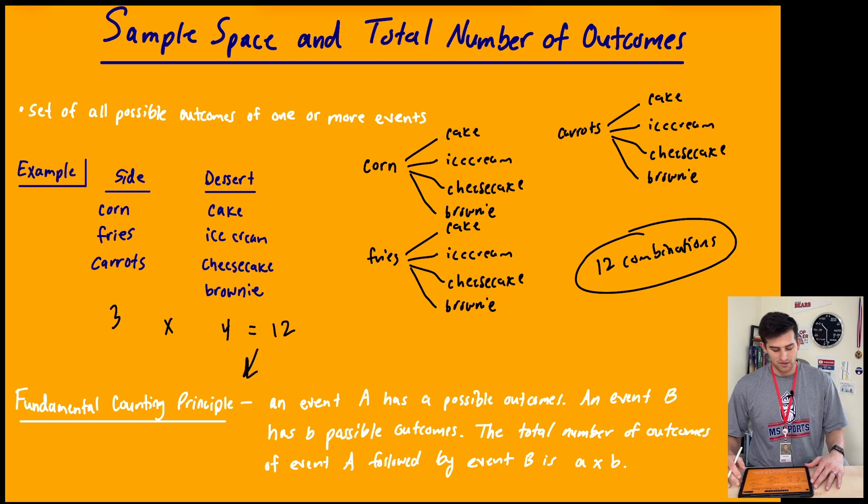And that brings us to what's known as the fundamental counting principle. It says an event A has A possible outcomes, and event B has B possible outcomes. So the total number of outcomes of event A followed by event B is A times B. And that's what we saw here with our sample space: three sides, four desserts, three times four is twelve different combinations.